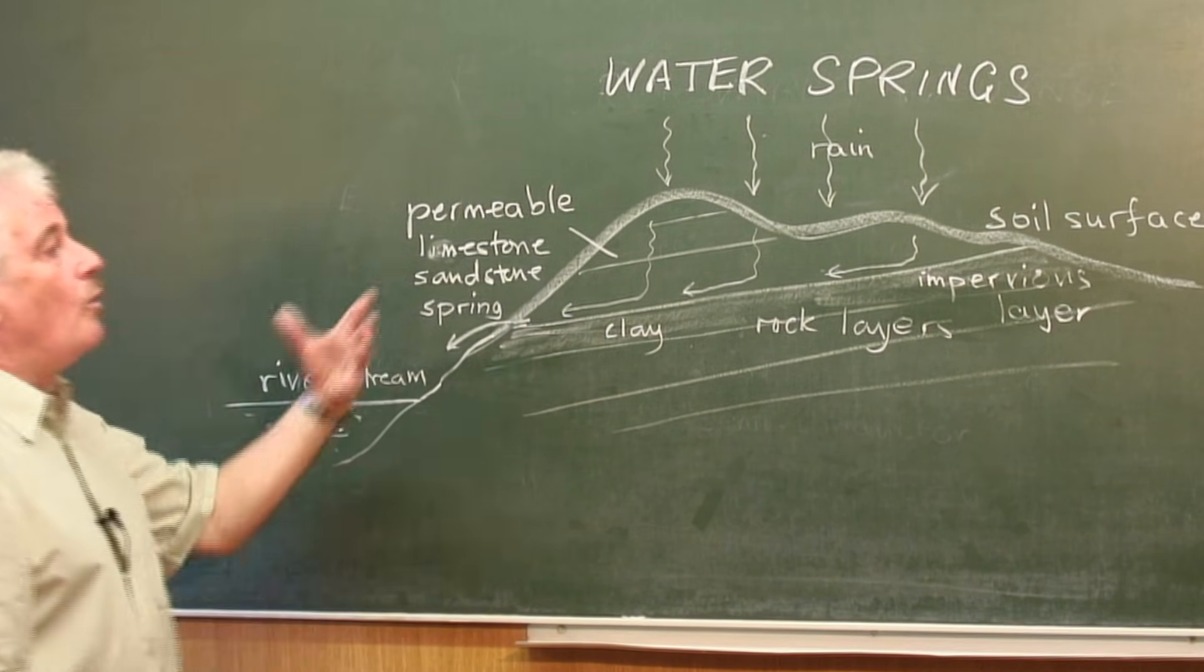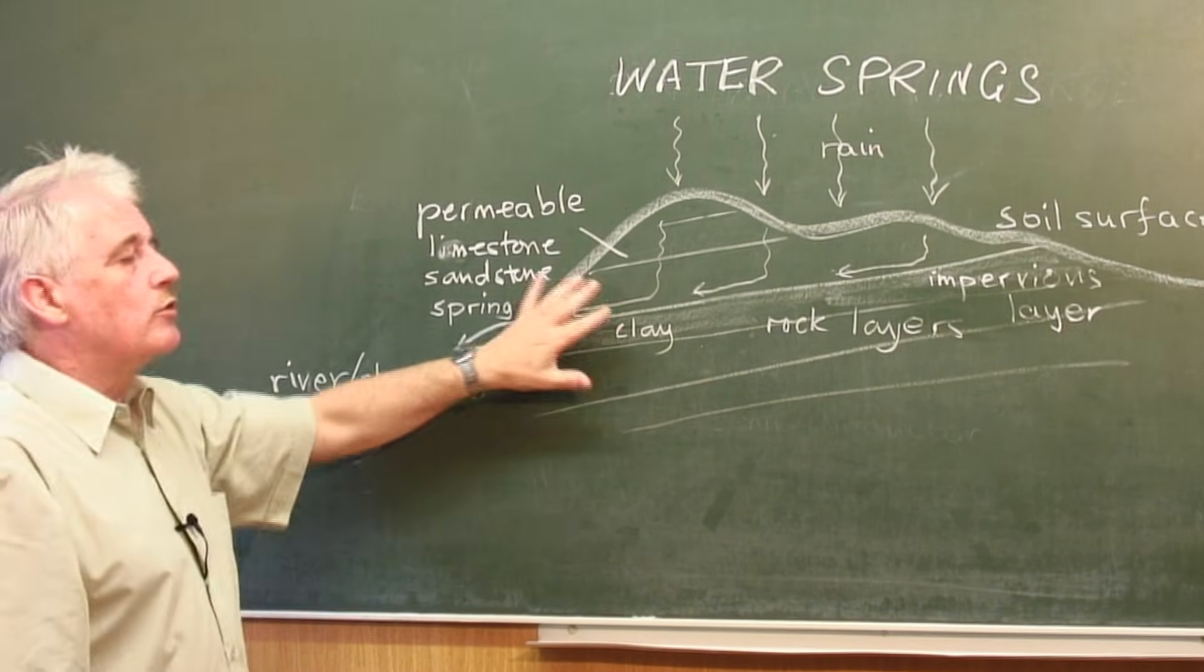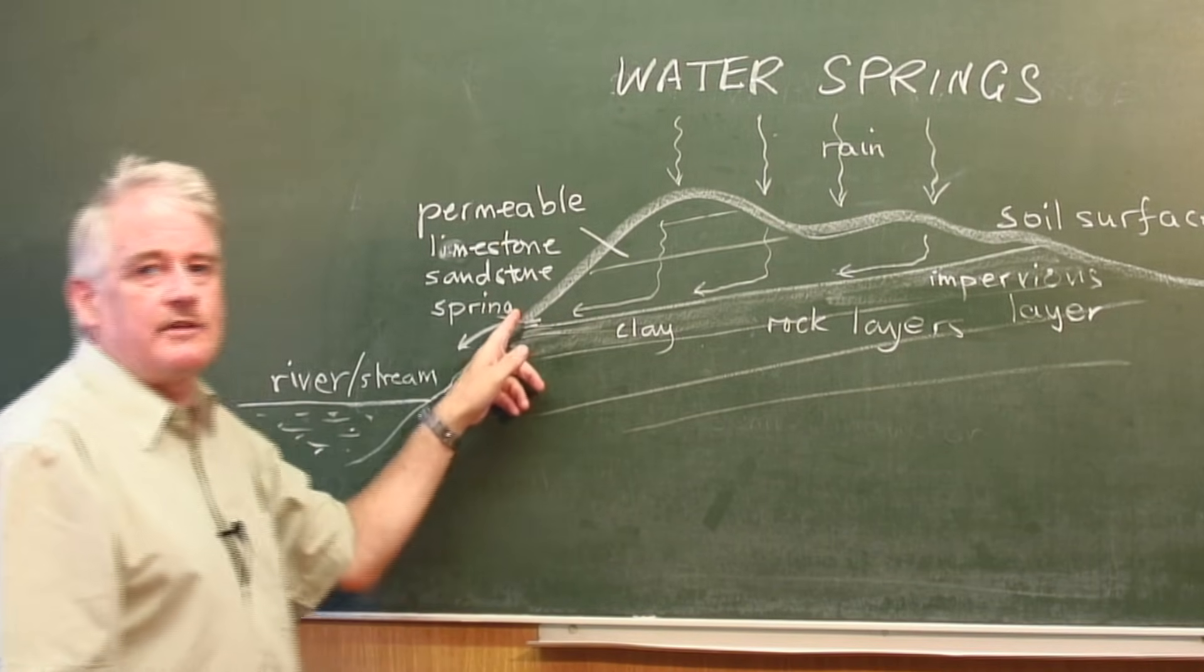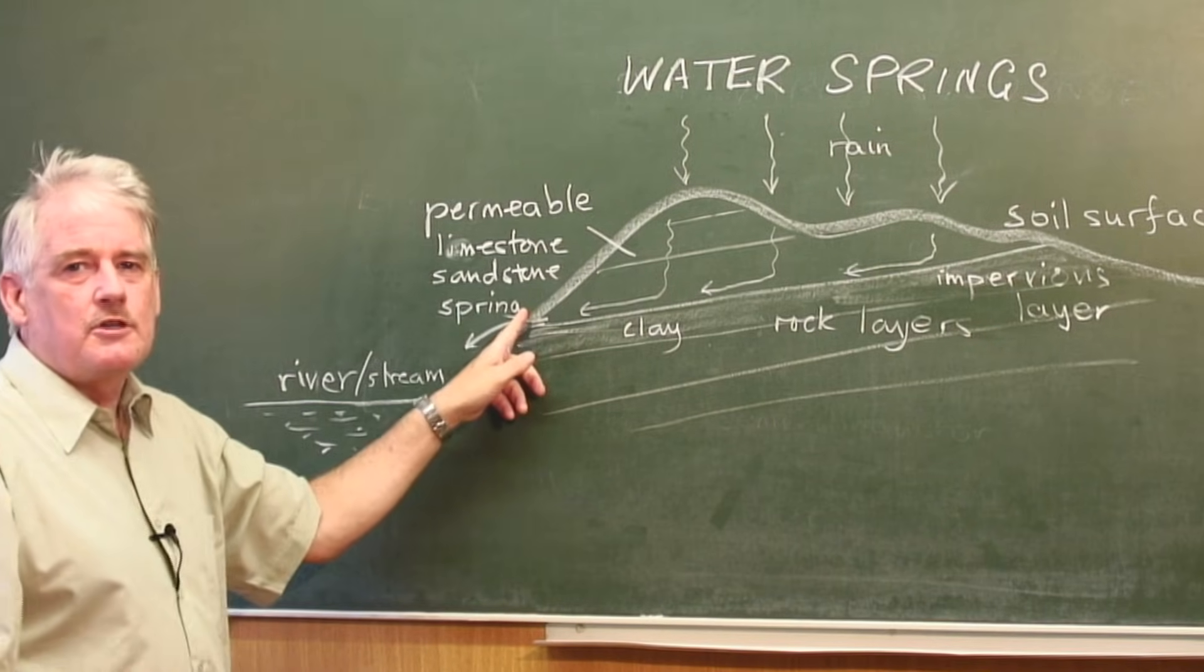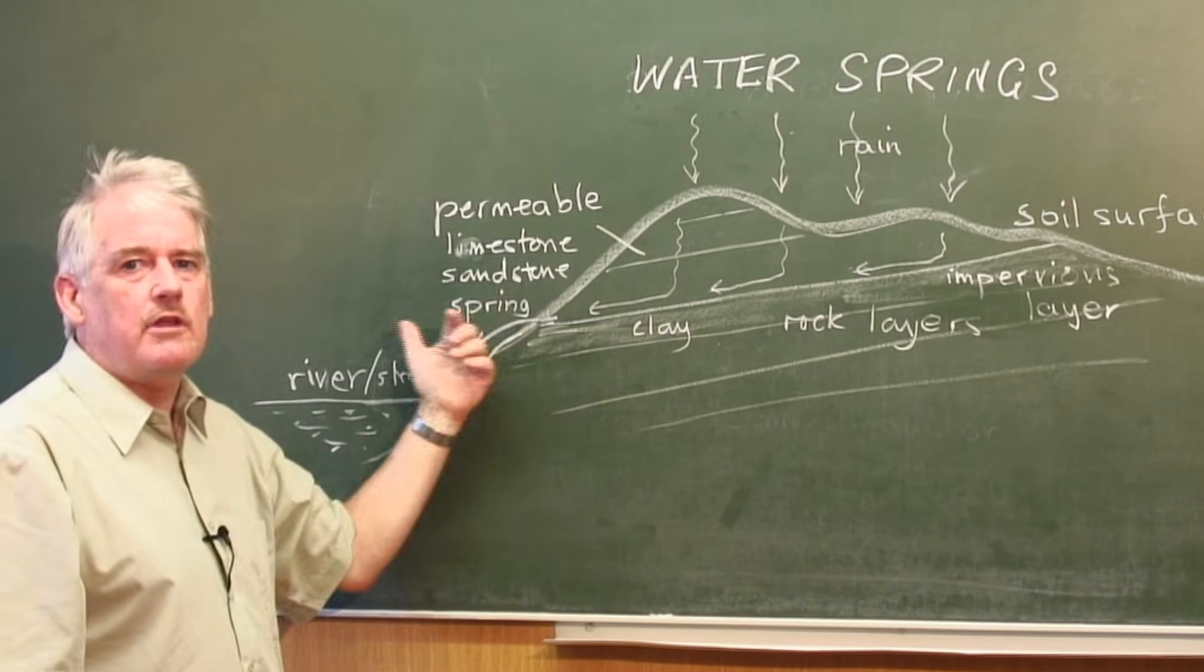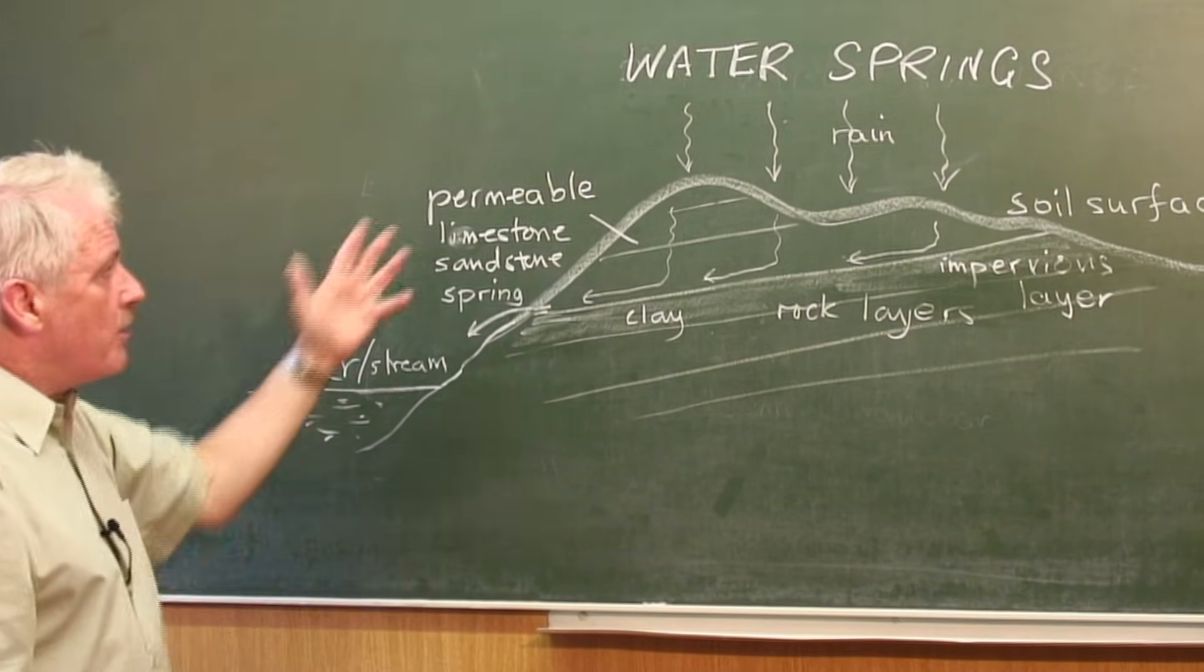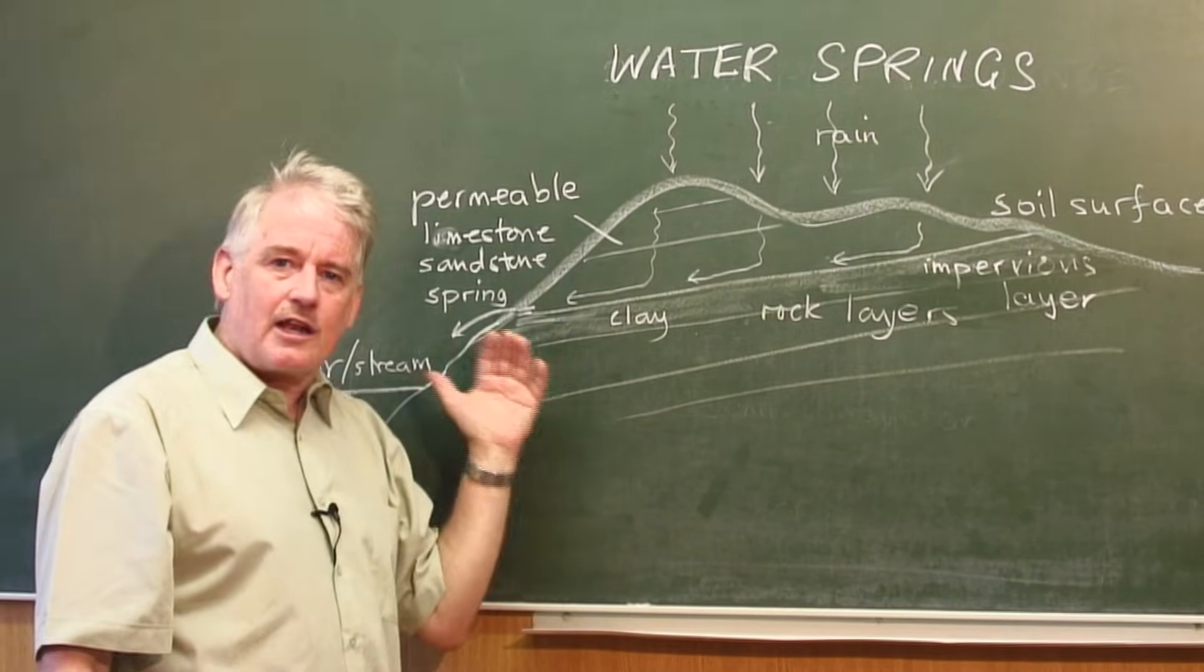So when we consider water springs, and if you look at old maps, you'll always find that next to a water spring very often is a temple. If it's in Roman times or Greek times, you'll find a temple there, because this was a very important thing, pure, drinkable water. So here we have water springs, the source of pure, drinkable, clean water.